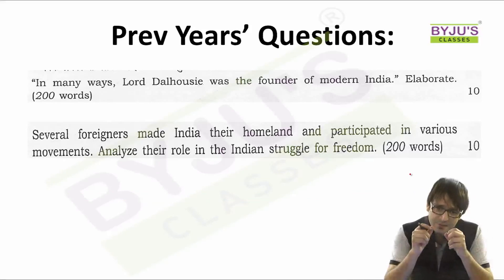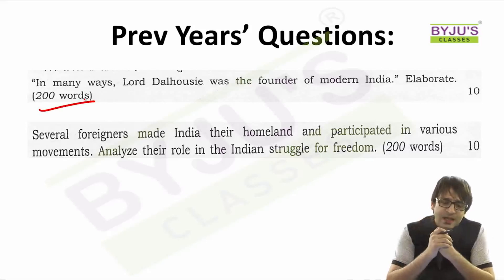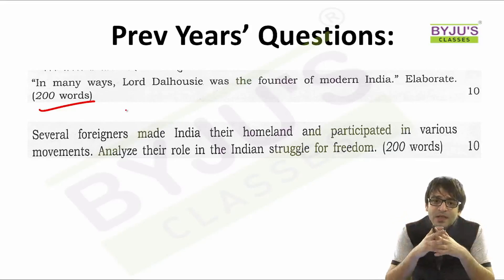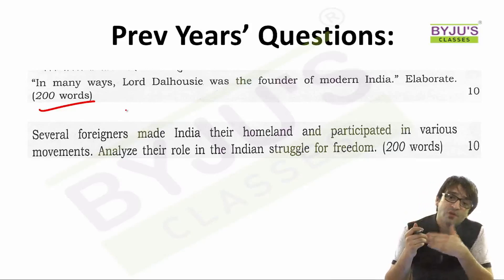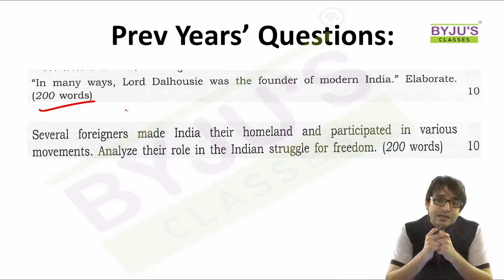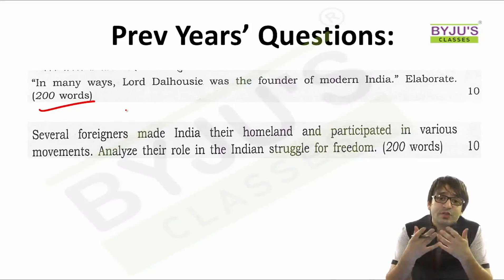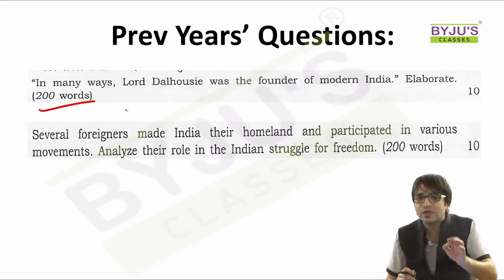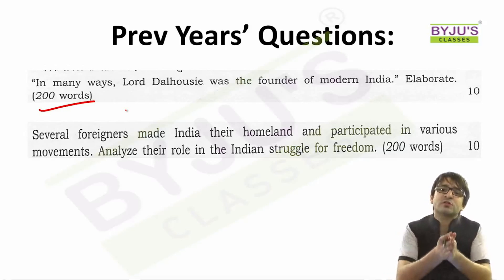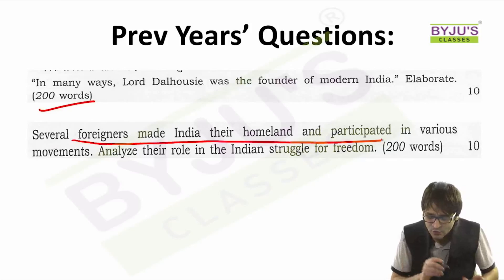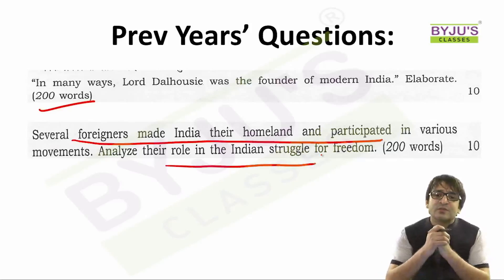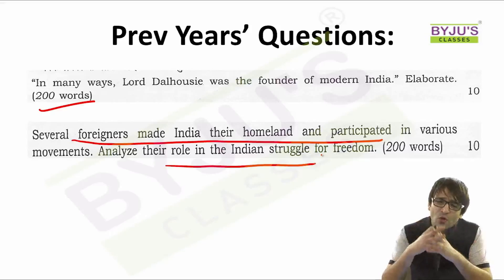Let us look at some questions asked over the past 5 years. A question was asked: 'In many ways, Lord Dalhousie was the founder of modern India — elaborate.' When we talk about personalities, we also talk about those who came from abroad and settled in India, including Annie Besant, Lord Dalhousie, Lord Cornwallis, and Lord Warren Hastings. Another question: 'Several foreigners made India their homeland and participated in various movements — analyze their role in India's struggle for freedom.' So personalities and social and religious reform movements are very important themes in modern Indian history.